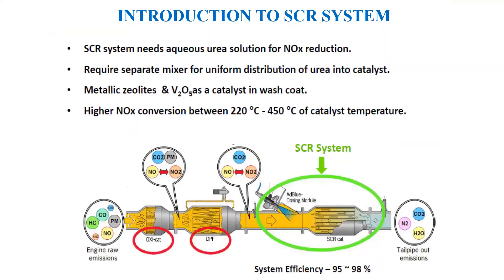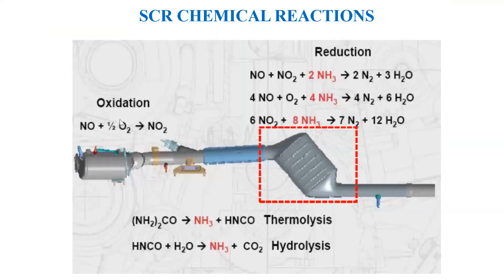The temperature performance is much better when you want higher NOx conversion. When the temperature is between 220 to 450 degrees Celsius, you get higher NOx conversion, and the efficiency of this SCR system is between 95 to 98 percent. You get an oxidation-reduction reaction — NOx is oxidized to NO2, and due to reduction, NO2 is further reduced to nitrogen and water when reacting with NH3. Thermolysis and hydrolysis chemical reactions take place.